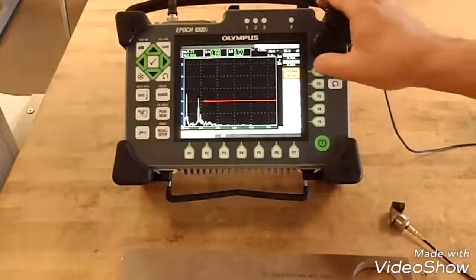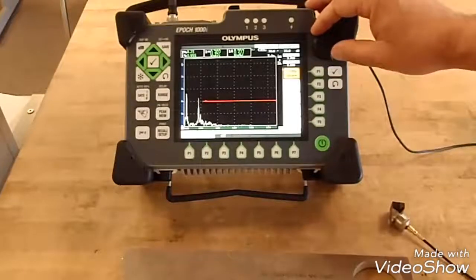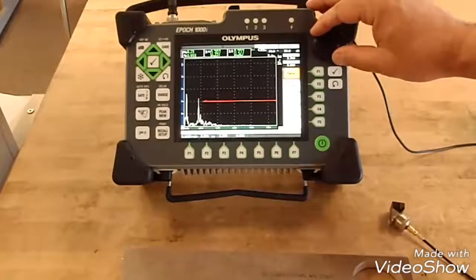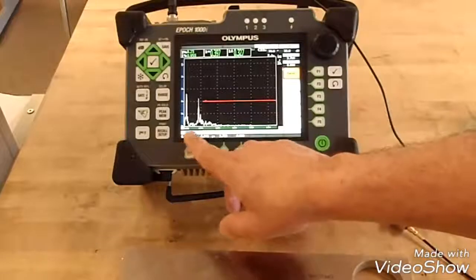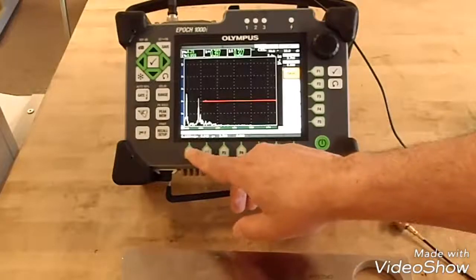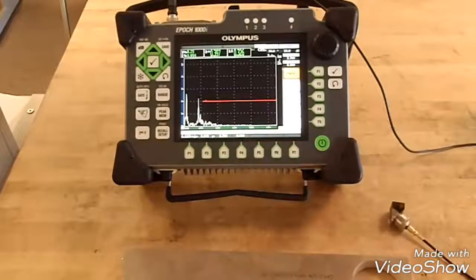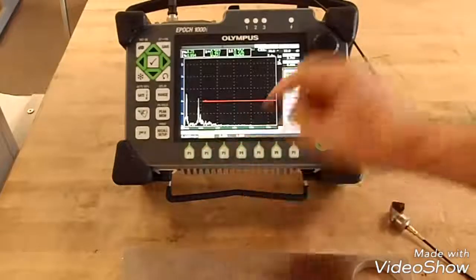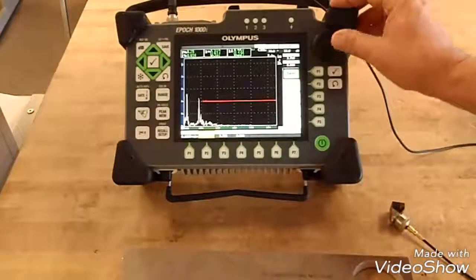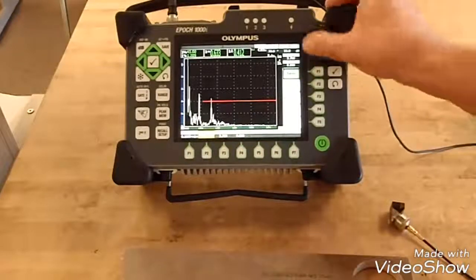Make sure that your velocity is set for carbon steel. In this case it's 0.1269 inches per microsecond. Turn your zero to zero, turn your range to five inches.